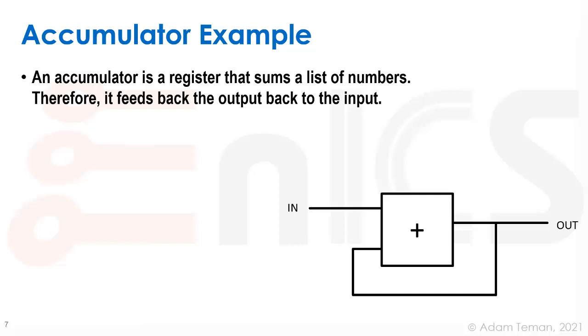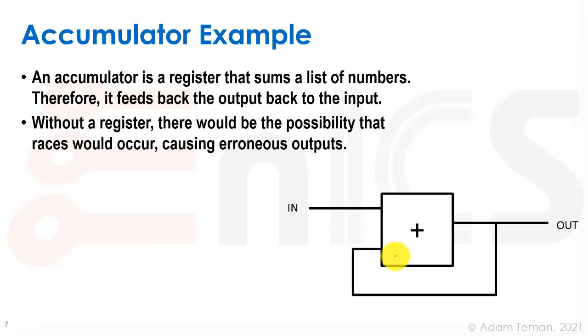Therefore it feeds back the output to the input as we can see here that the output from the circuit goes back into the accumulator itself. Now without a register there would be the possibility that races would occur and we would get erroneous outputs.